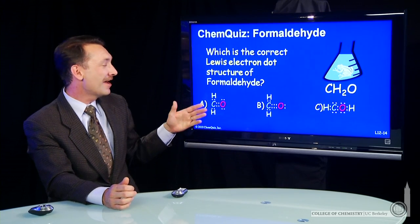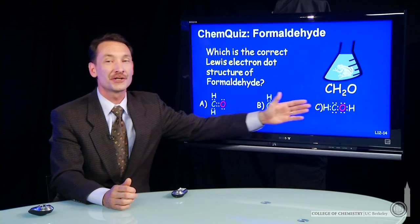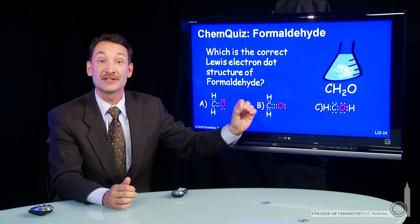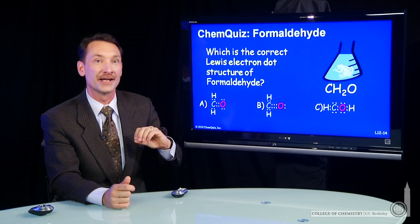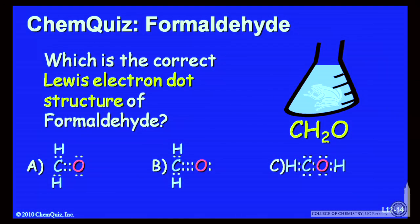The question I have is, which of these structures is the correct Lewis electron dot structure for formaldehyde? Think about that for a minute and make a selection.